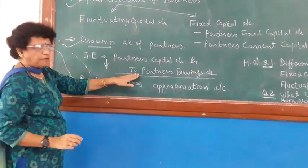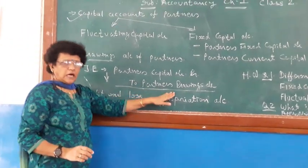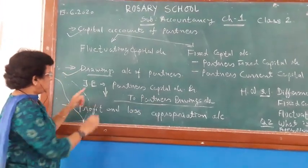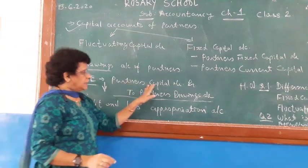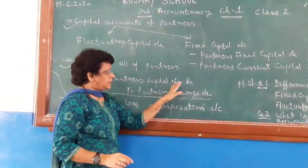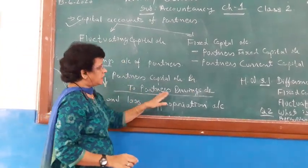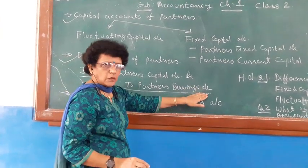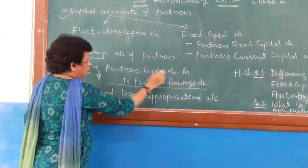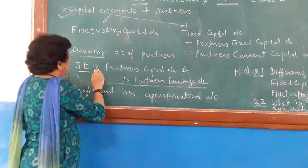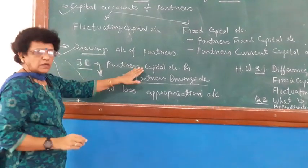To record the impact in the books of account, we write the journal entry. The Drawing Account is transferred to the Partner's Capital Account, and as a result, the capital of the partner decreases.